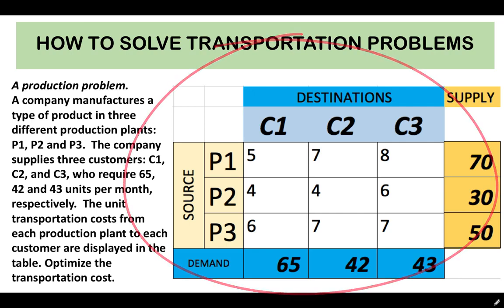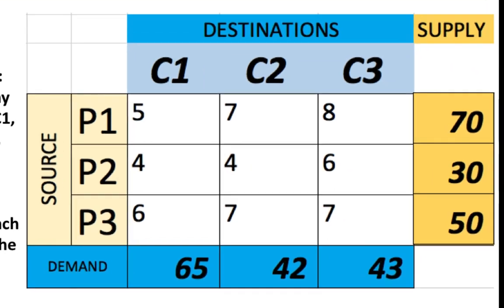Here is our problem for today. A company manufactures a product in three different production plants: P1, P2, and P3. The company supplies three customers — C1, C2, and C3 — who require 65, 42, and 43 units per month, respectively. The unit transportation costs from each production plant to each customer are displayed in the table. For example, the transportation cost from plant P1 to customer C1 is $5, and from plant P2 to customer C1 is $4, and so on.